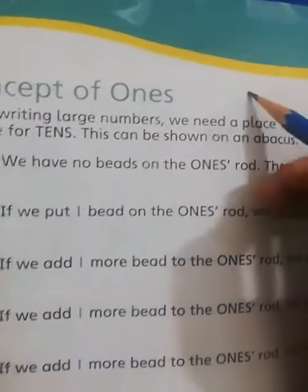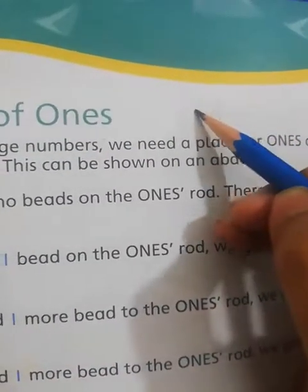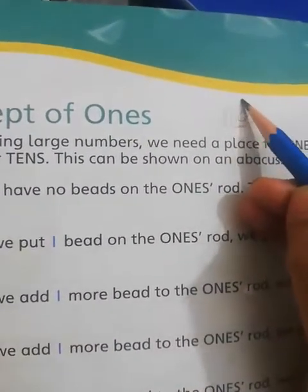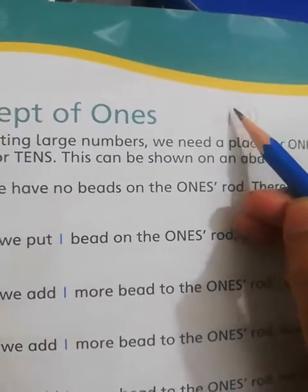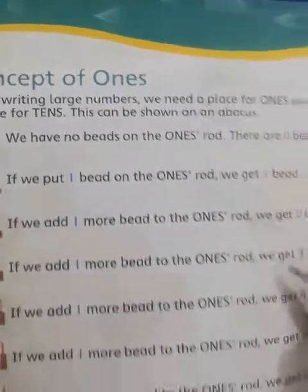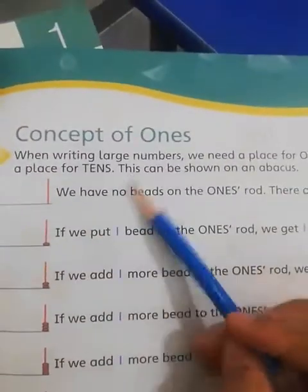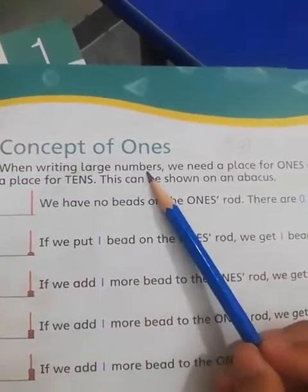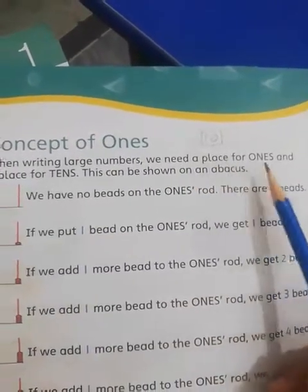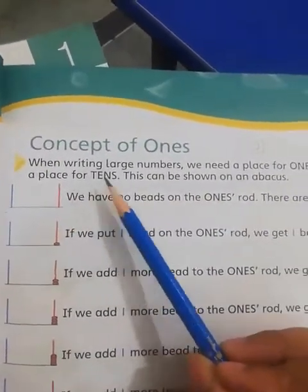When we have tens — ten — these are two digits. So ones and tens: if it is single, it comes in ones. When writing large numbers, we need a place for ones and a place for tens.